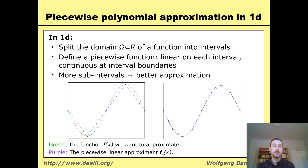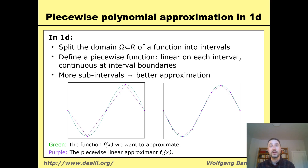In this picture, the purple functions in both pictures are the approximation and the green function is the one I want to approximate. It is quite obvious to see that the purple one becomes a better approximation to the green one if I allow myself twice as many intervals, which I do on the right compared to the left.